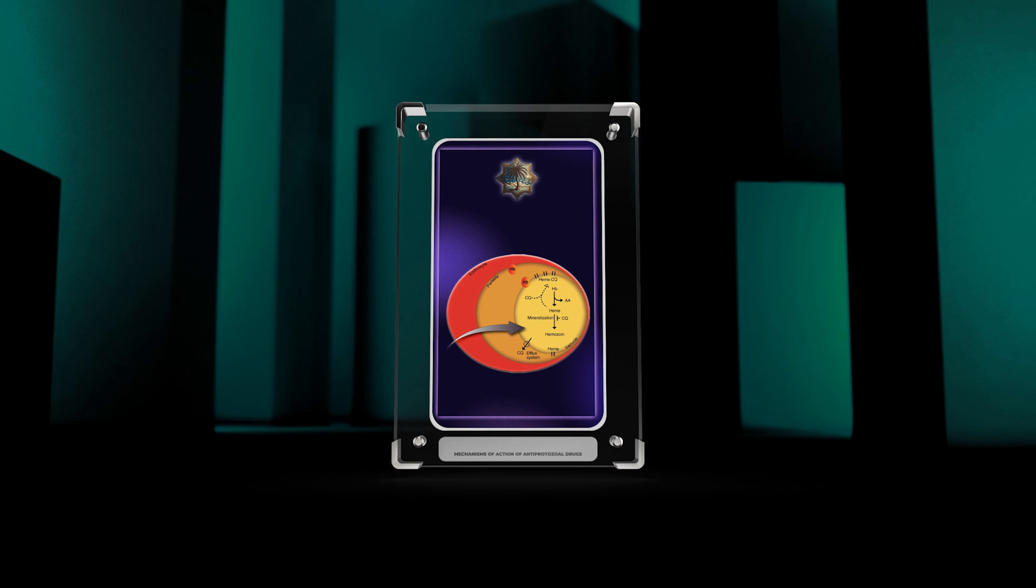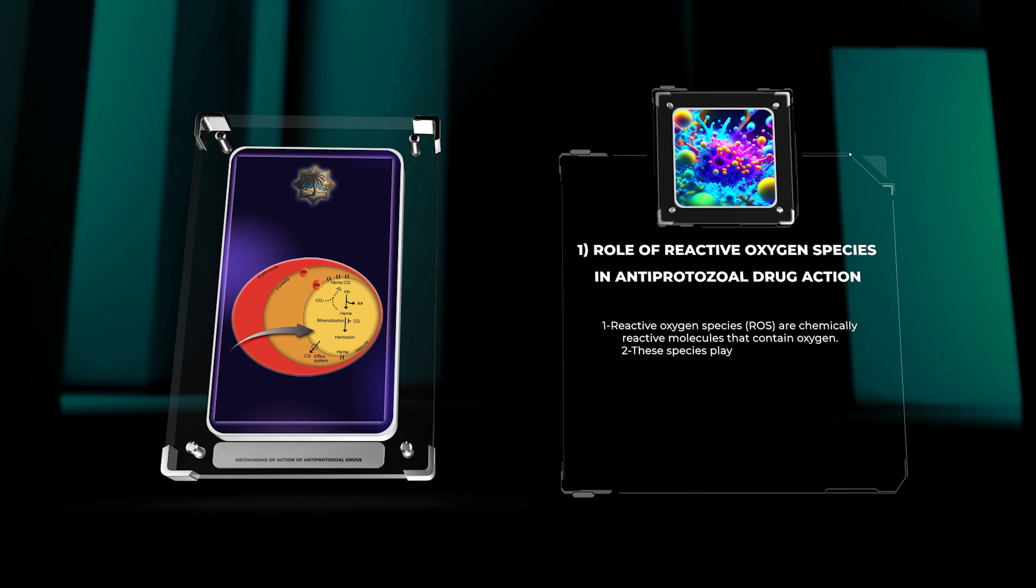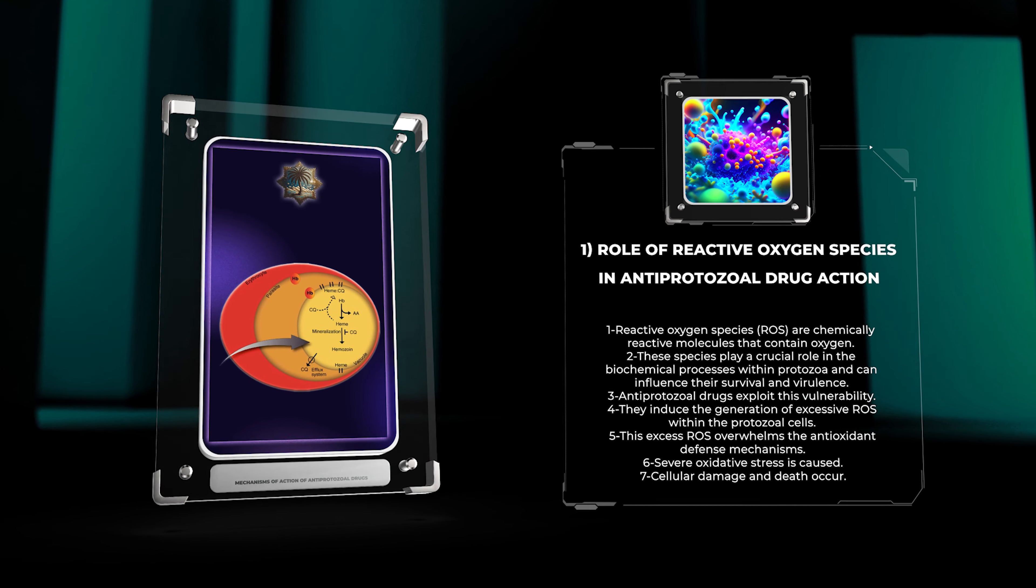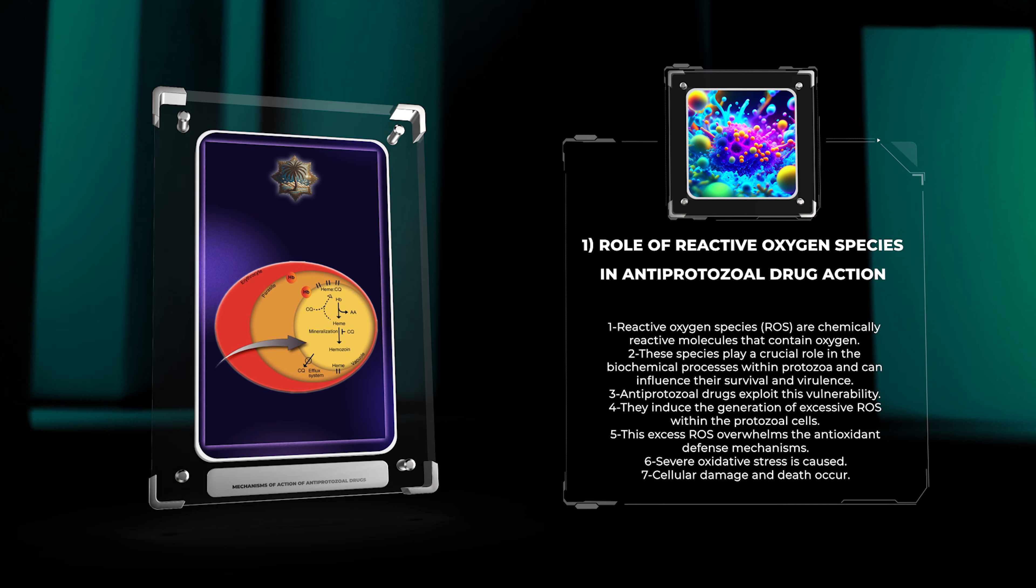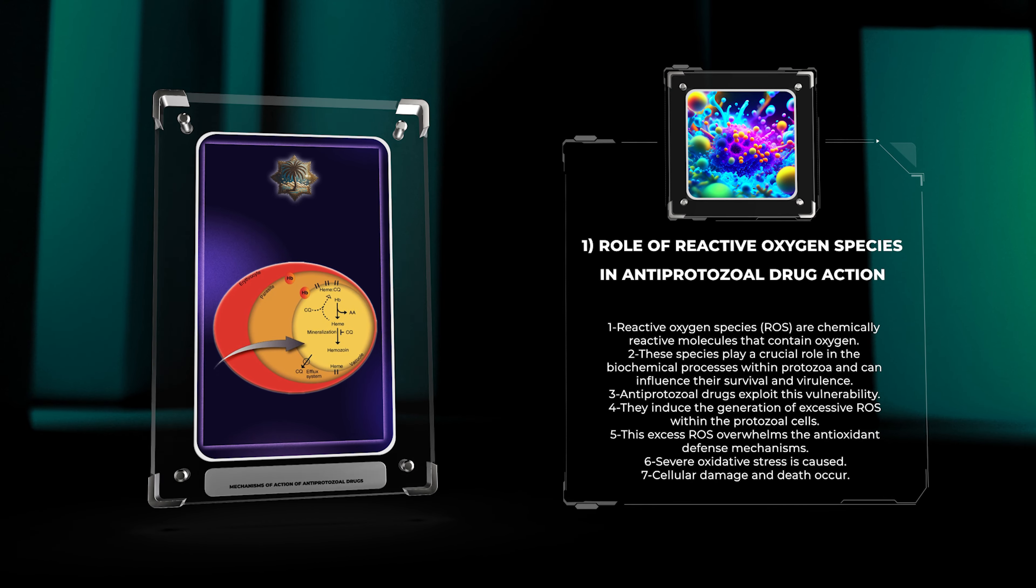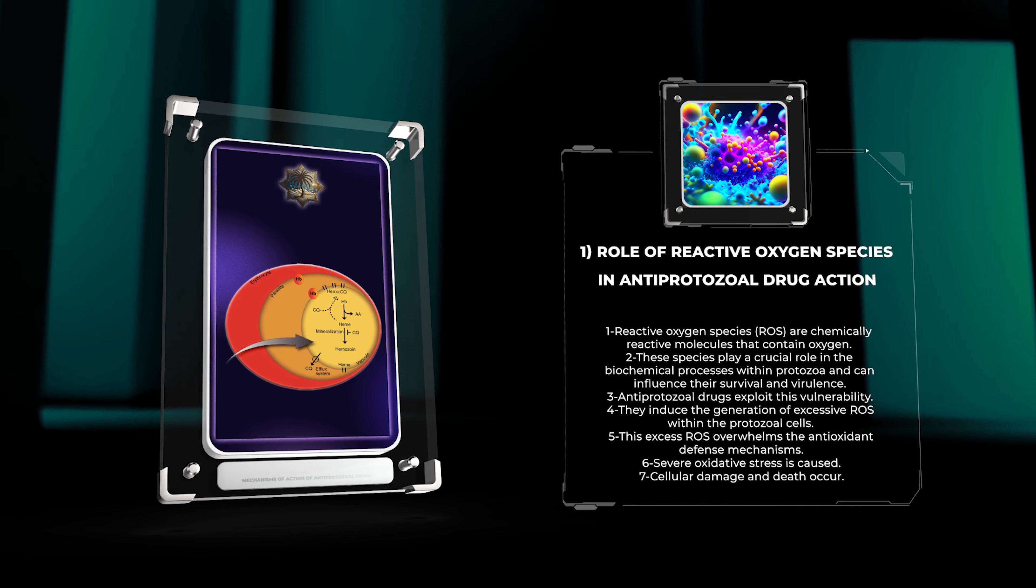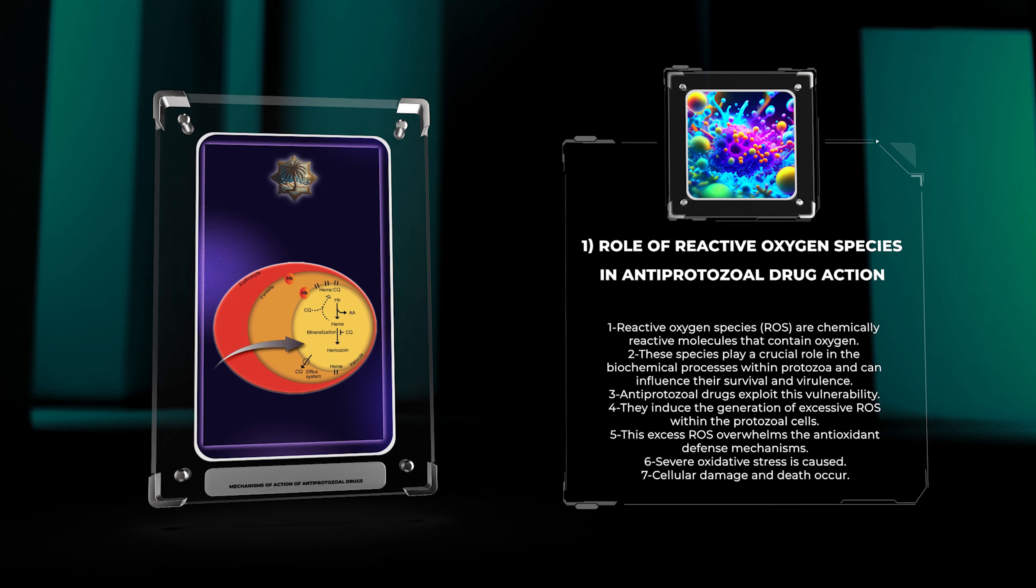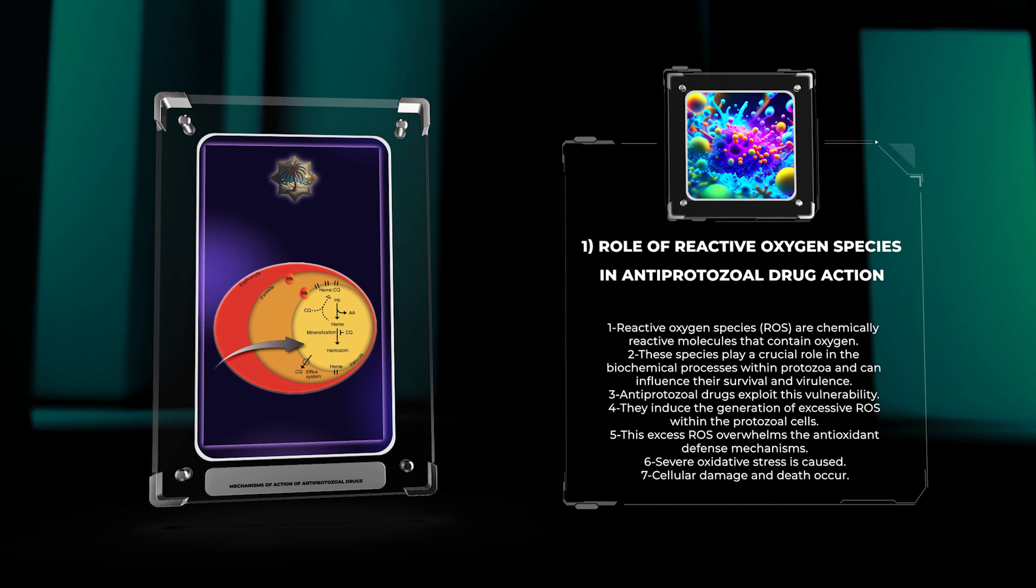Let's begin. Reactive oxygen species (ROS) are chemically reactive molecules that contain oxygen. These species play a crucial role in the biochemical processes within protozoa and can influence their survival and virulence. Antiprotozoal drugs exploit this vulnerability by inducing the generation of excessive ROS within the protozoal cells. This excess ROS overwhelms the antioxidant defense mechanisms, leading to severe oxidative stress and ultimately causing cellular damage and death.